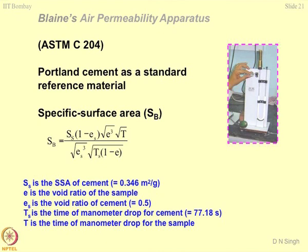The container shown here — when you pack the cement in this container, it will give you a typical void ratio e_s value of normally 0.5. It is an old method, and people do not use this method much anymore; they normally go for the BET method shown earlier. Just to give you an idea of where the research is in cement manufacturing: people are trying to maximize the surface area of cement. If you can create a cement of the order of 50 meter square per gram, that would be wonderful.